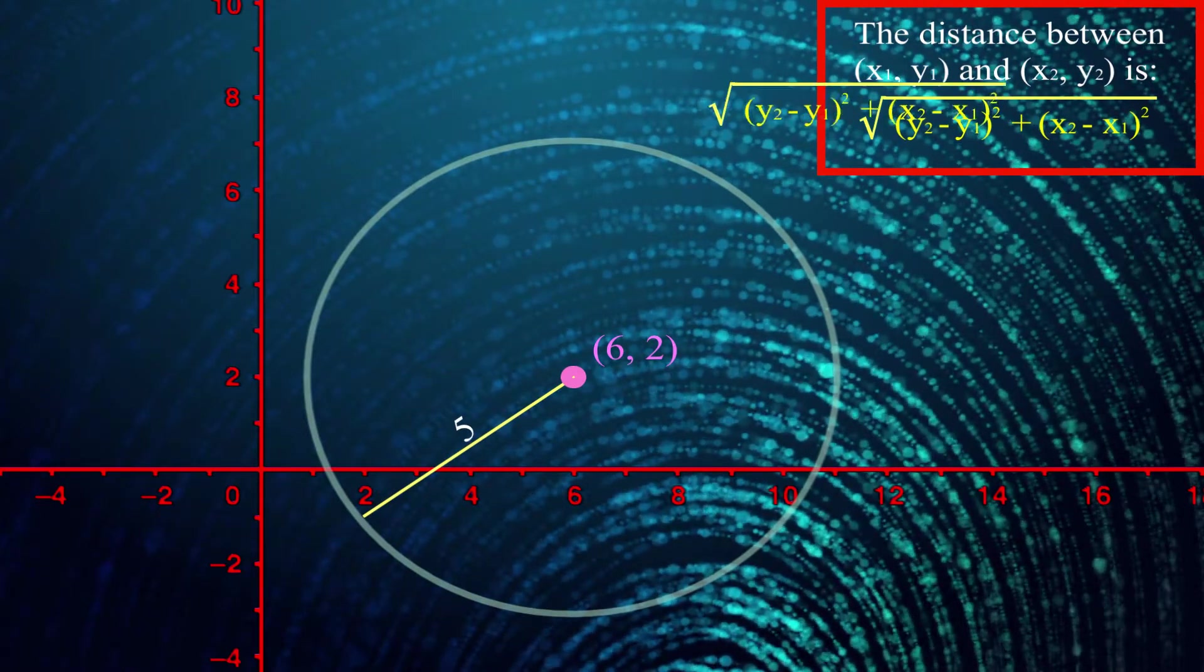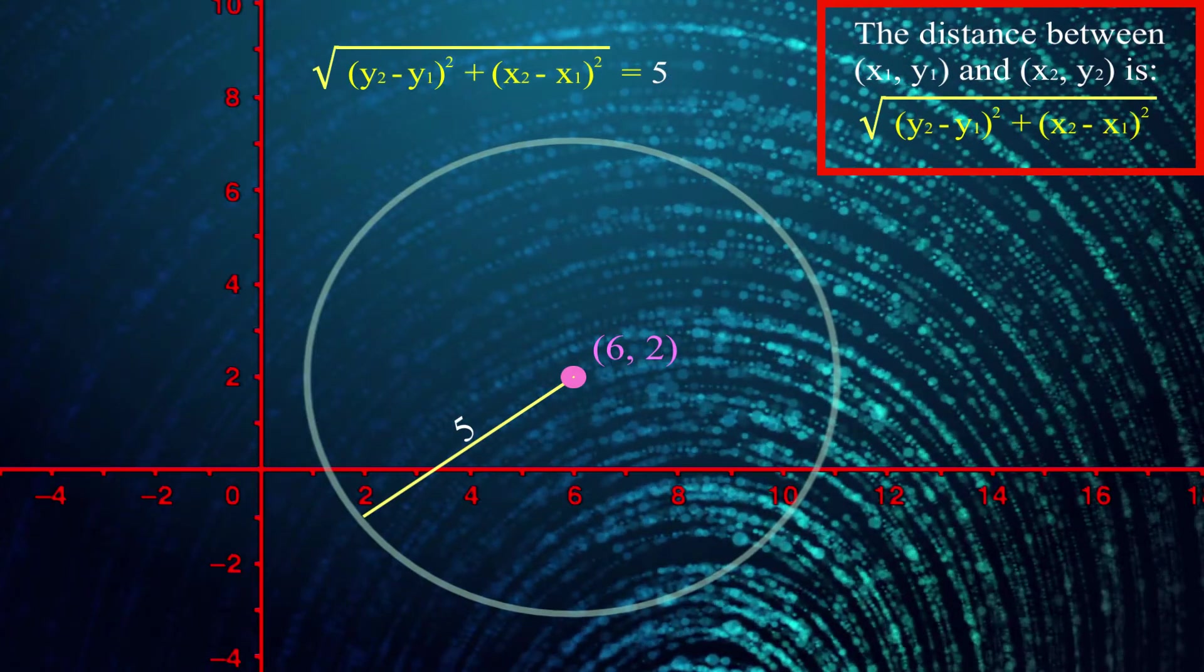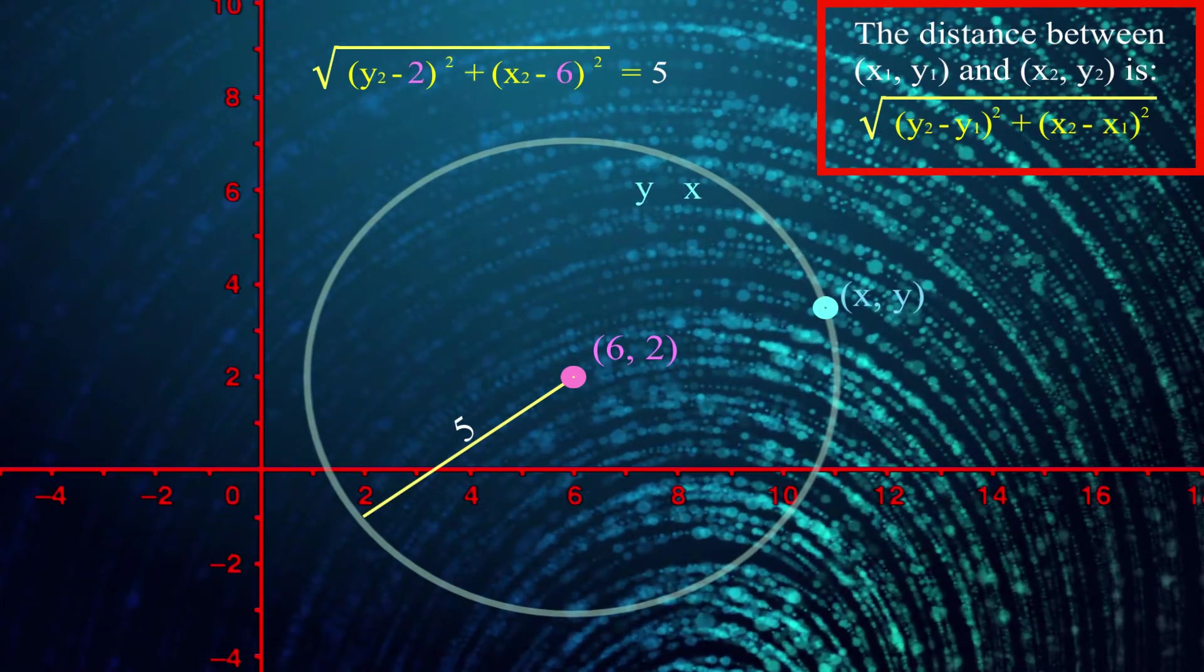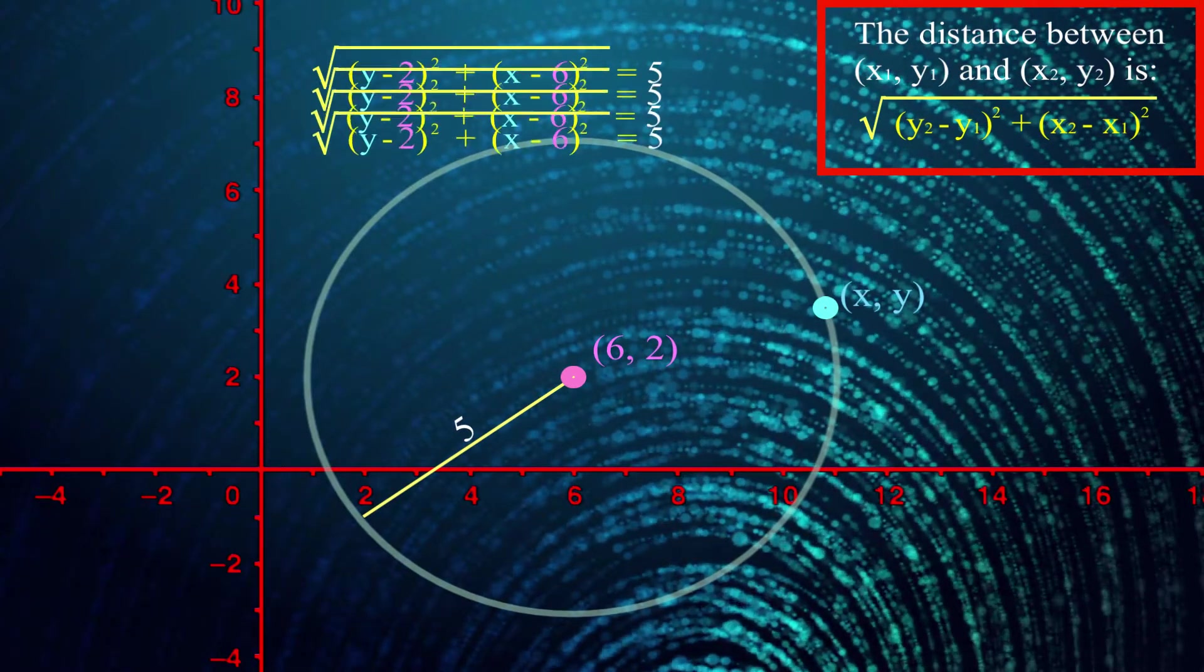Put differently, if you set up our distance equation with a 5 in place of the distance, the coordinates of the pink dot as one of the points, and just x and y as the coordinates of the blue dot, all of the different x-y pairs that'll satisfy this equation will fall on this circle.